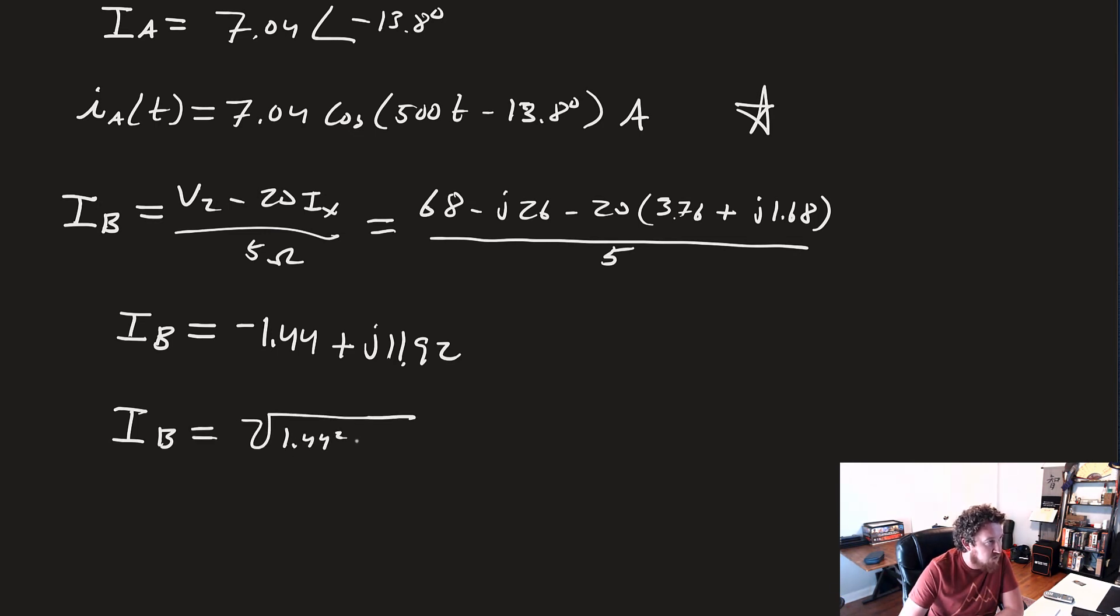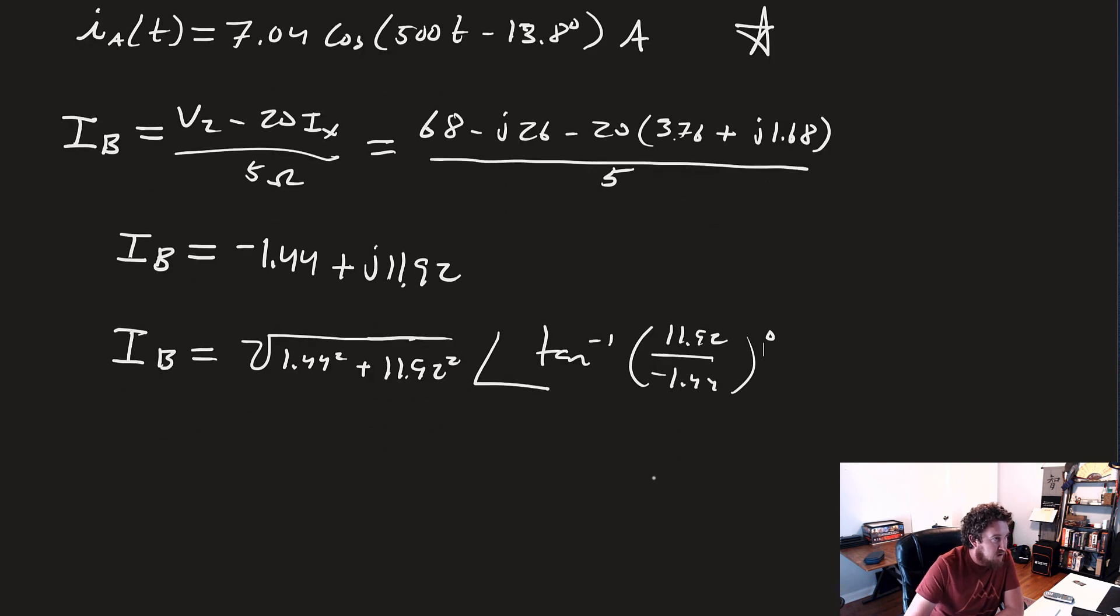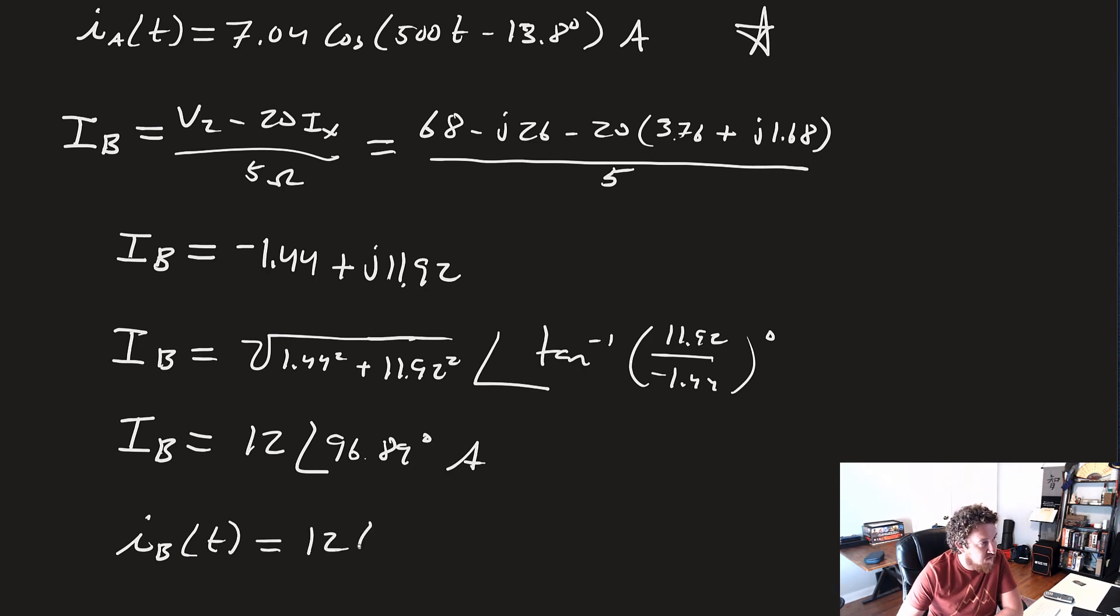So that means our time domain steady state sinusoid is equal to 12 times the cosine of 500t plus 96.89 degrees in amps.